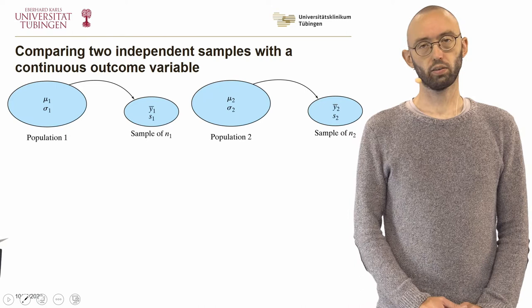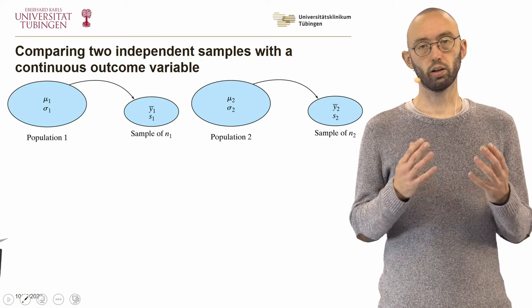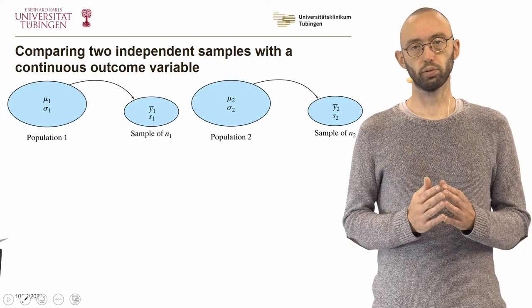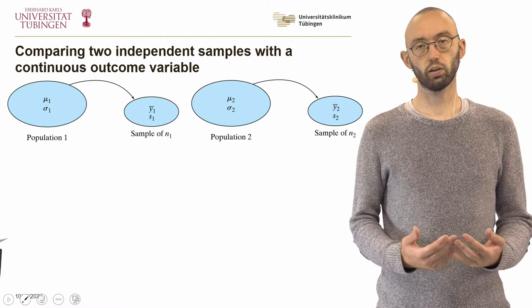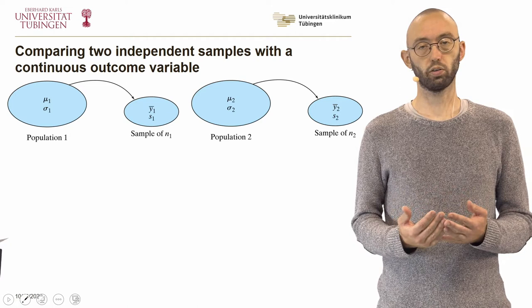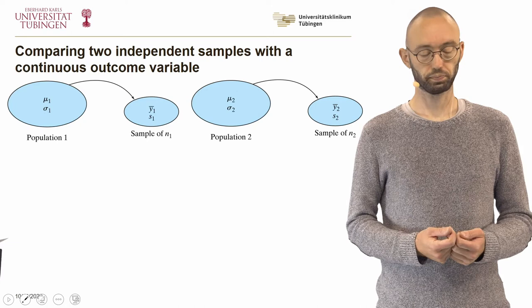In the last lectures, we typically looked at how we can construct a confidence interval or an estimate of the precision of the population mean given a limited sample. In this case, we have two populations that we are interested in comparing. For example, you could be interested in comparing the height between men and women, or the weight of male and female babies.